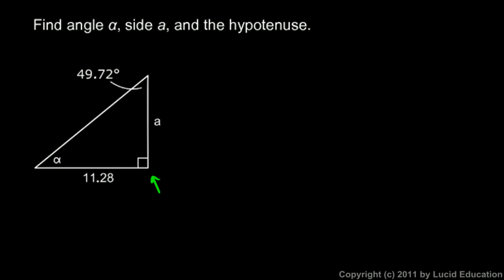If we know 90 degrees and this, then we can find that. These two angles have to add up to 90, so alpha will be 90 minus 49.72. That comes out to 40.28 degrees.